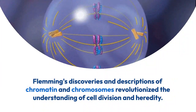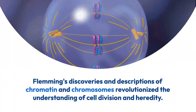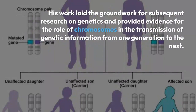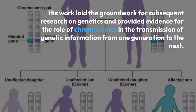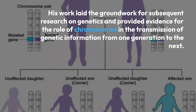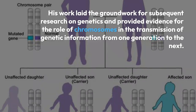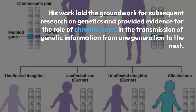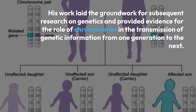Fleming's discoveries and descriptions of chromatin and chromosomes revolutionized the understanding of cell division and heredity. His work laid the groundwork for subsequent research in genetics and provided evidence for the role of chromosomes in the transmission of genetic information from one generation to the next. Other scientists also contributed greatly at that time and began to discover the exact material responsible for transferring hereditary information from parents to offspring.